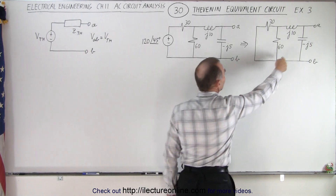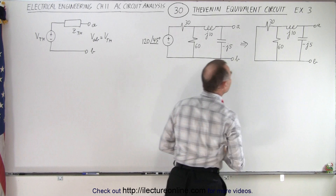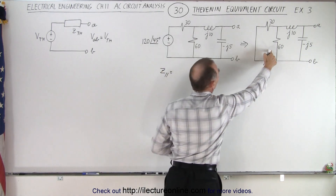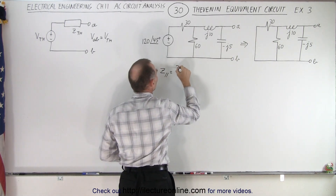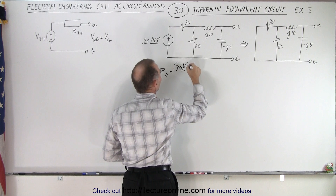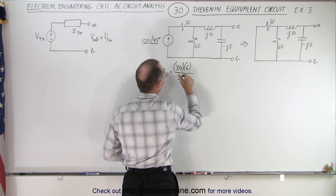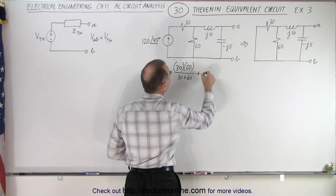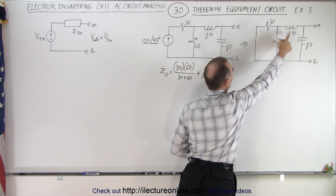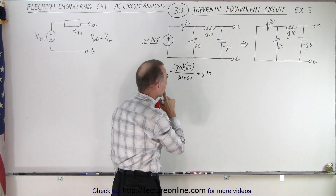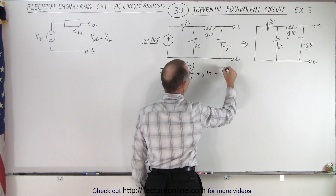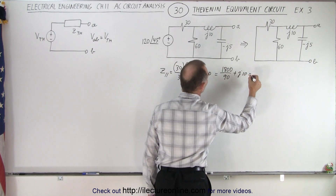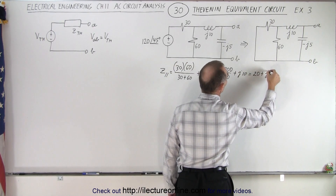Let's first find the impedance of the parallel branch along with the inductor. Z_parallel is equal to the product over the sum of the two resistors: 30 times 60 divided by 30 plus 60, and then we add that to j10, because the inductor j10 is in series with the two resistors. This gives us 1800 divided by 90 plus j10, which equals 20 plus j10.